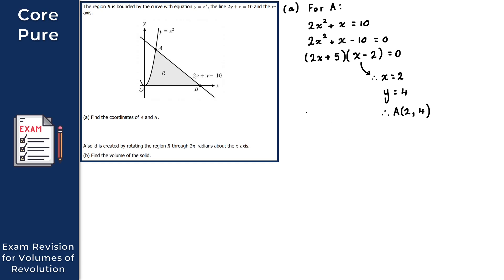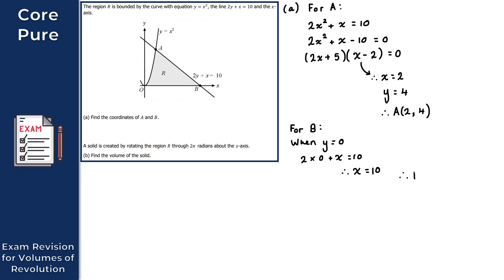For point B — the intersection of the line 2y plus x equals 10 with the x-axis — we set y equals 0. Substituting: 2 times 0 plus x equals 10, so x equals 10. That gives the coordinates of B as (10, 0). That gives the solution to part A.